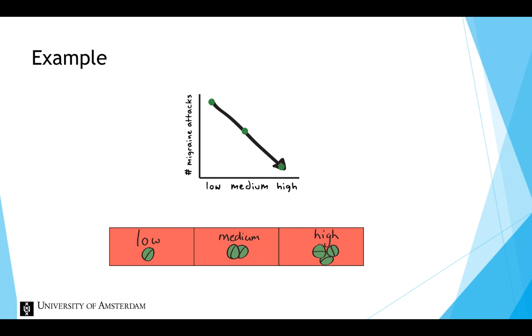In this example, there is only one independent variable, so one factor, namely dosage. But this simple design could be extended by adding a second factor, for example, gender.